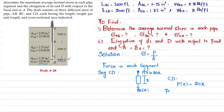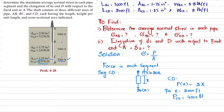For x equal to 2,000 feet — that is the length of segment CD — the load P_CD equals 2 times 2,000, which gives 4,000 pounds.